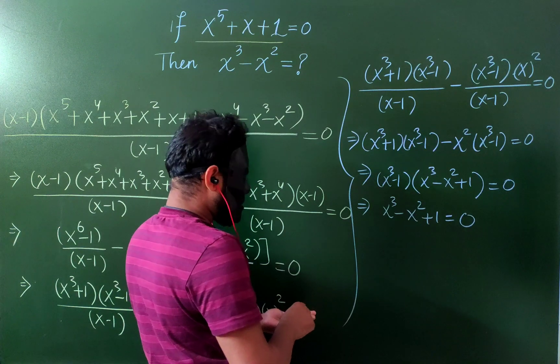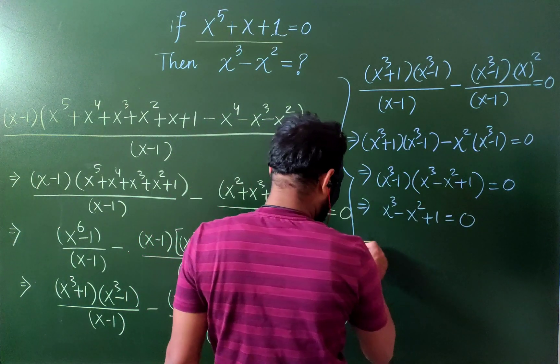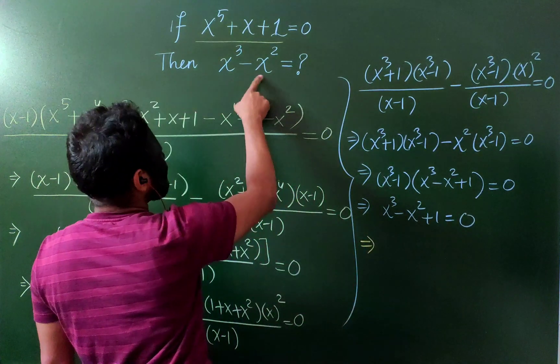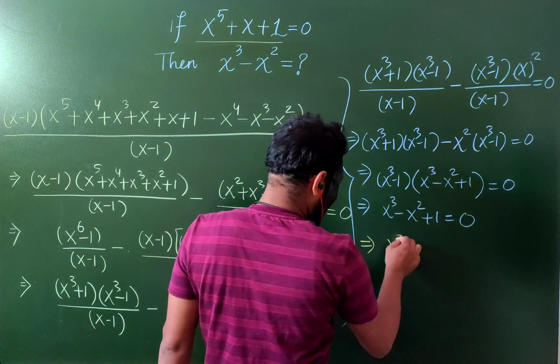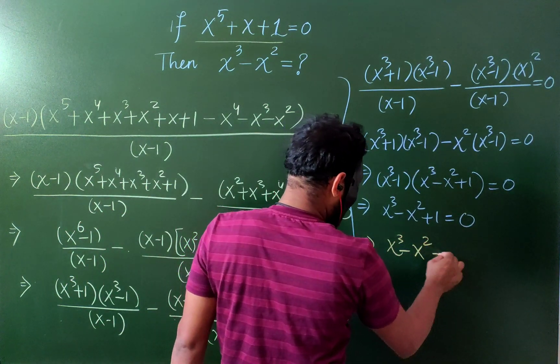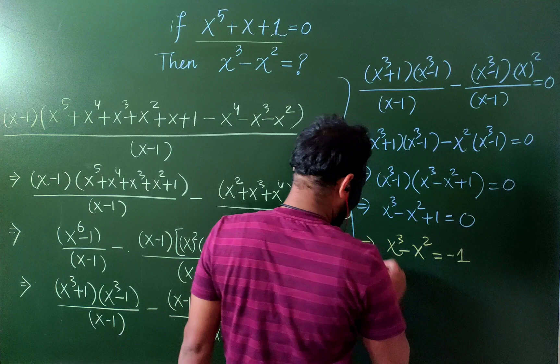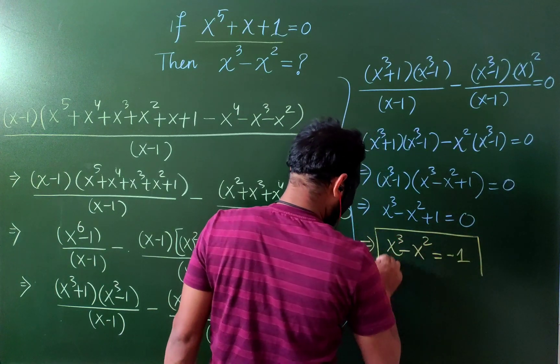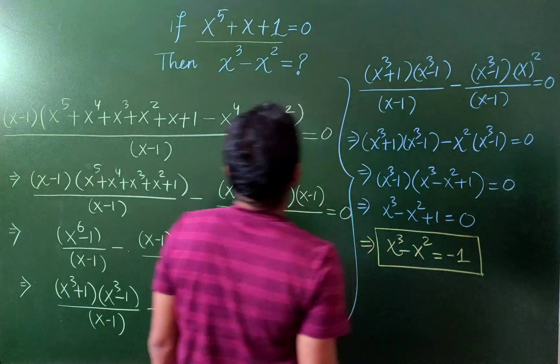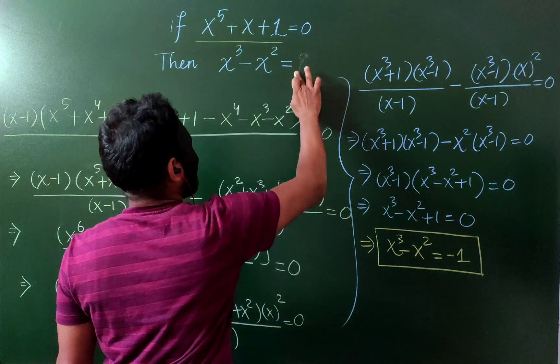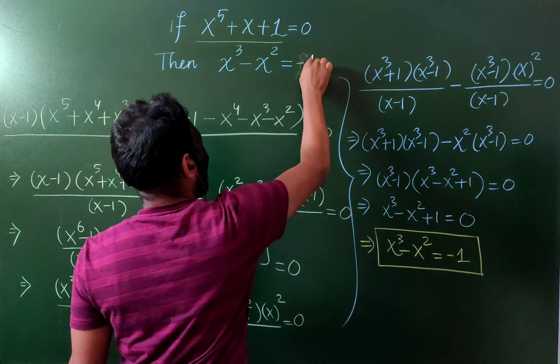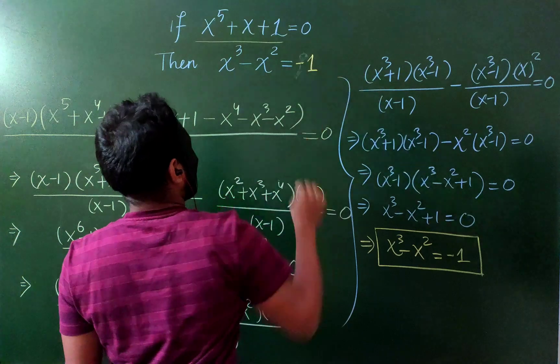And then, we have our required solution. That is, we want x^3 minus x^2. So, x^3 minus x^2 is minus 1. This is what we wanted. So, this thing is nothing but minus 1. Right.